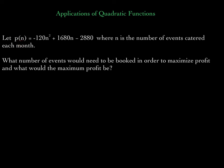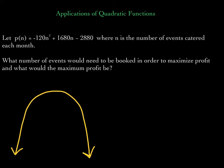The question is: what number of events would need to be booked in order to maximize the profit? We need to find the number n. Now we know that this is a quadratic function because it's to the power of 2. And we know that when we graph this quadratic, it'll be a parabola.